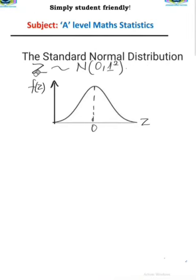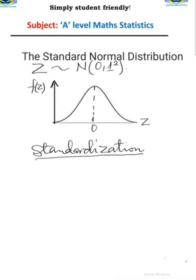The standard normal distribution with variable Z also follows the normal distribution with mean 0 and standard deviation 1. The cumulative probability values of Z can easily be calculated, and in fact these have been calculated and presented in tables called standard normal tables. It is from these tables that we can easily calculate probability values for the normal distribution. To use the standard normal tables, you must convert the normal variable X into the standard normal variable Z. This process is called standardization, and the formula is: Z = (X − mu) / sigma.